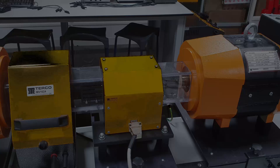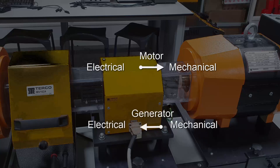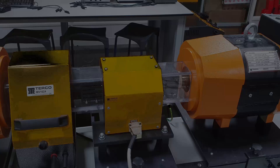The starting point in your understanding of DC machines is recognizing, firstly, that a motor converts electrical energy into mechanical energy. Conversely, a generator converts mechanical energy into electrical energy. Normally we call a machine a device which is capable of operating as either a motor or a generator. As we'll see, it's often the case that the same device can act as both depending on how you excite them.